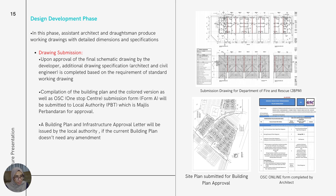One scope of work is drawing submission. After approval of the final schematic drawing by the client, additional drawing specifications shall be produced by the architect and civil engineer to produce standard working drawings. The compilation of the building plan shall be submitted to the local authority, Majlis Perbandaran, for building approval. A building plan and infrastructure approval letter shall be issued by the local authority if the submitted plan does not require any amendments. Shown on the right are examples of submission drawings for BOMBA, which is the colored version.